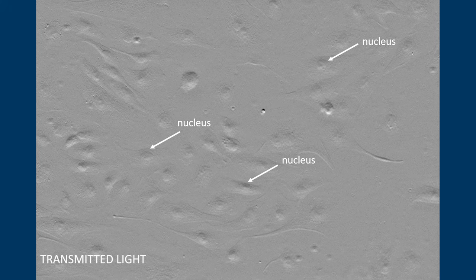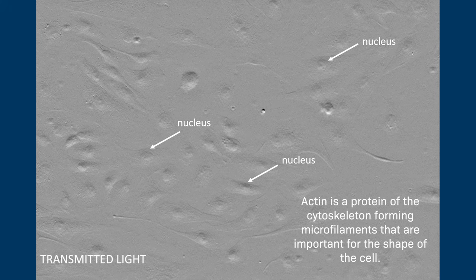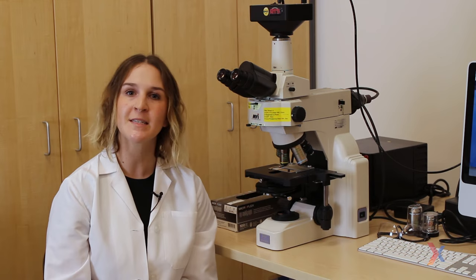But if we wanted to localize a particular protein of interest such as actin, we aren't able to because we can't differentiate that protein from the rest of the molecules in the cell. So fluorescence can help us because we can use a fluorescent molecule to label our protein of interest to make it stand out from the background of the cell.